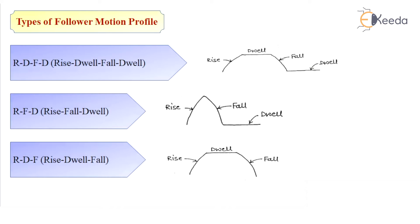The first type is RDFD, stands for rise, dwell, fall and dwell. Rise is a motion of the follower wherein the follower moves outward. Dwell is a motion wherein the follower remains at the same position even if the cam rotates. Fall is the motion wherein the follower returns to its initial position of the cam rotation, and dwell as it remains in the same position.